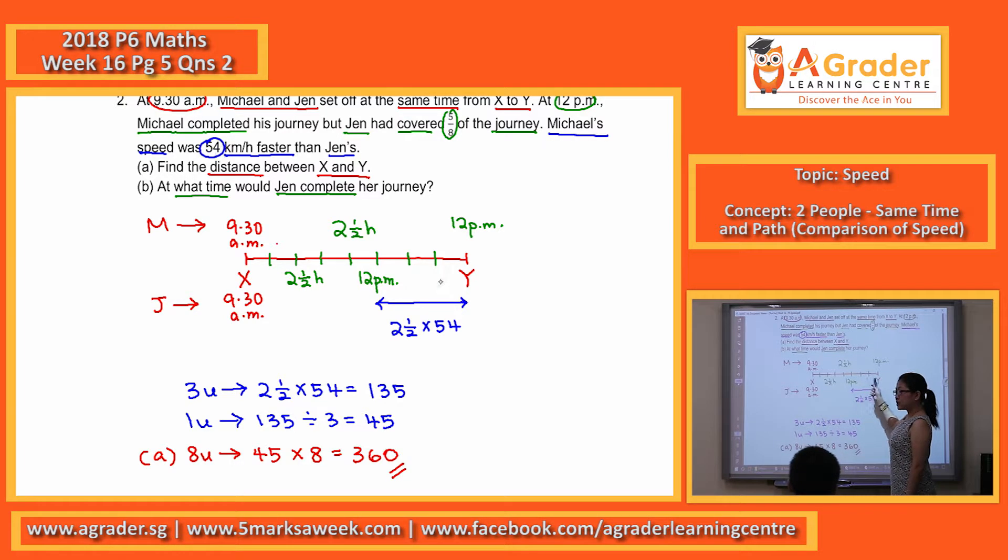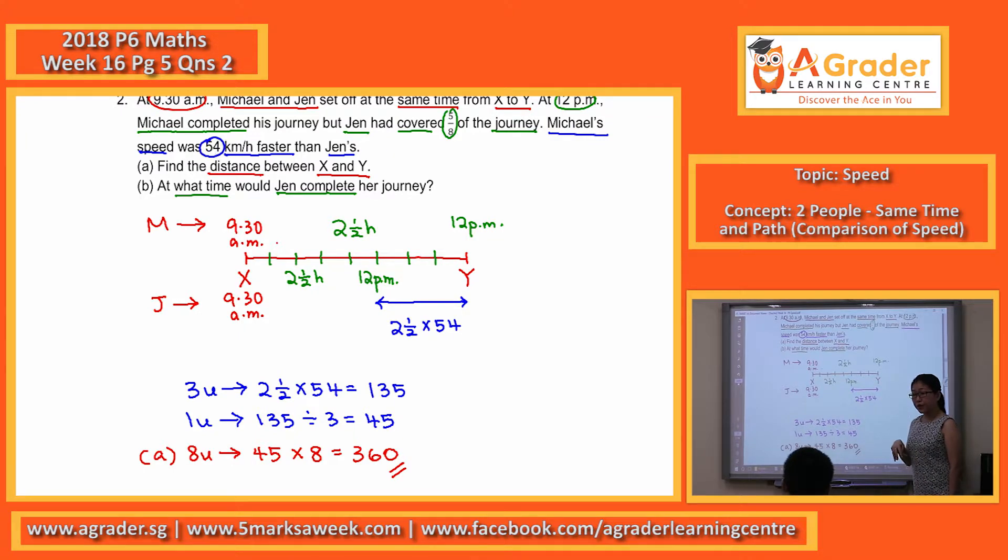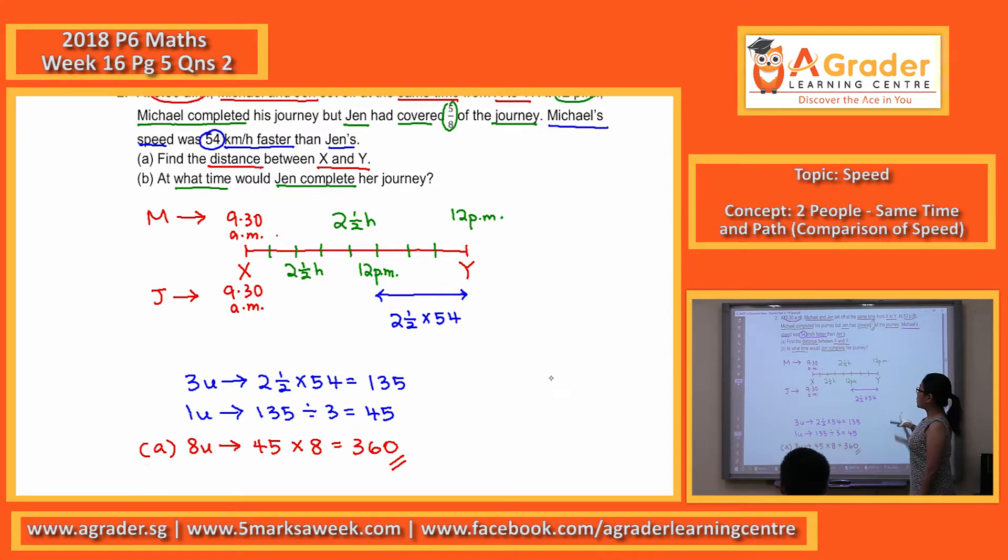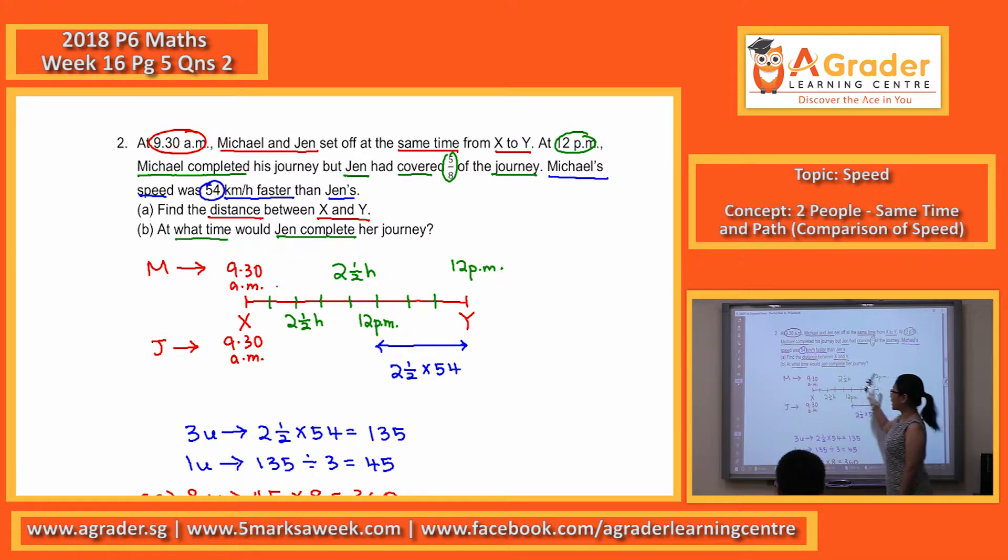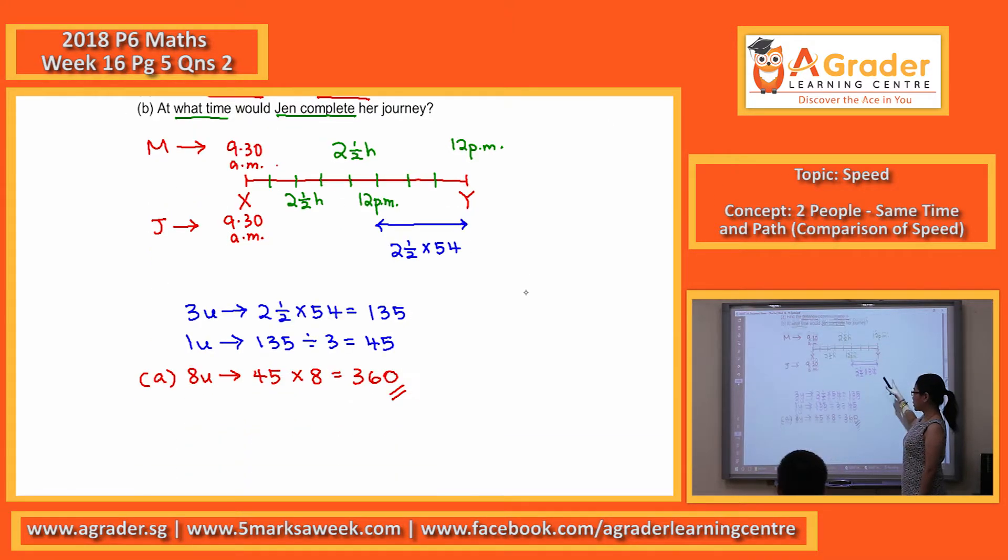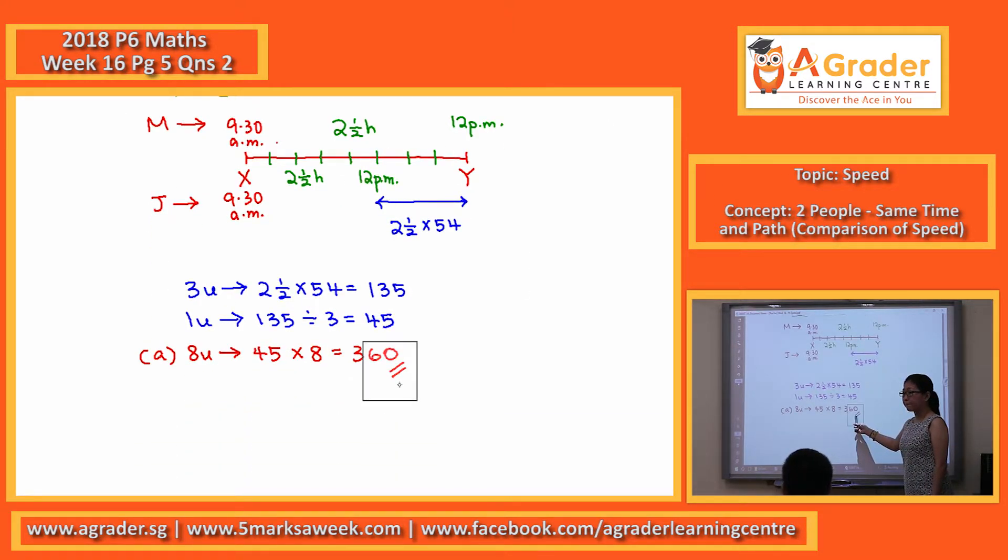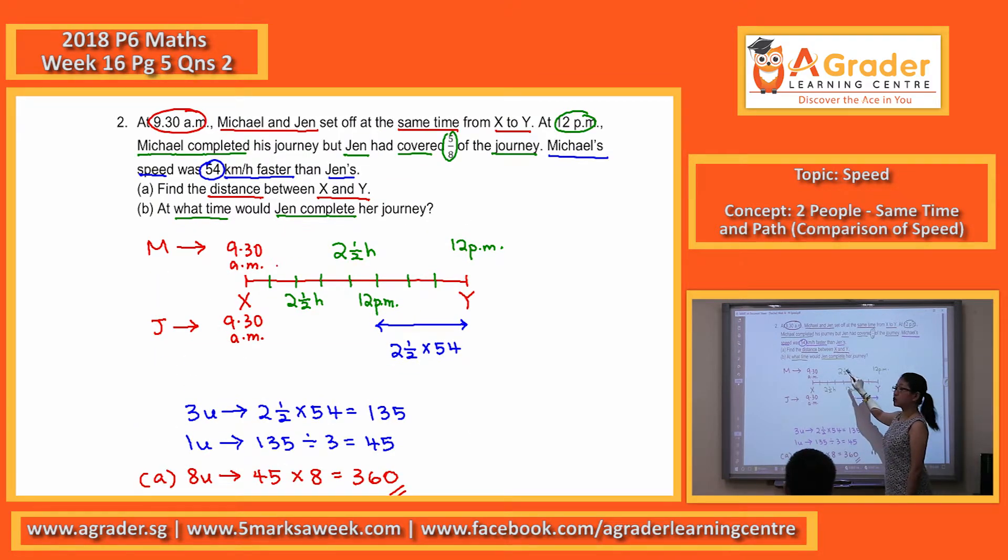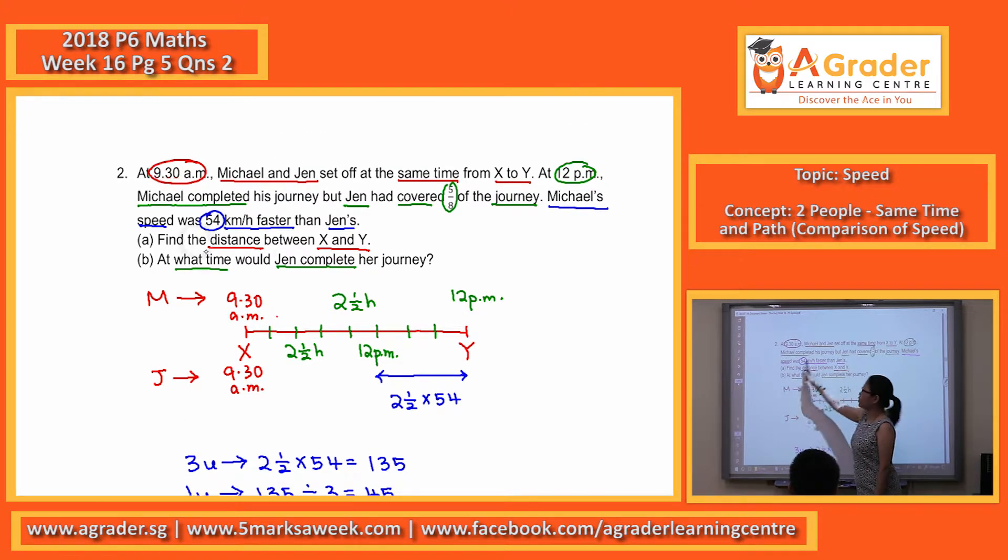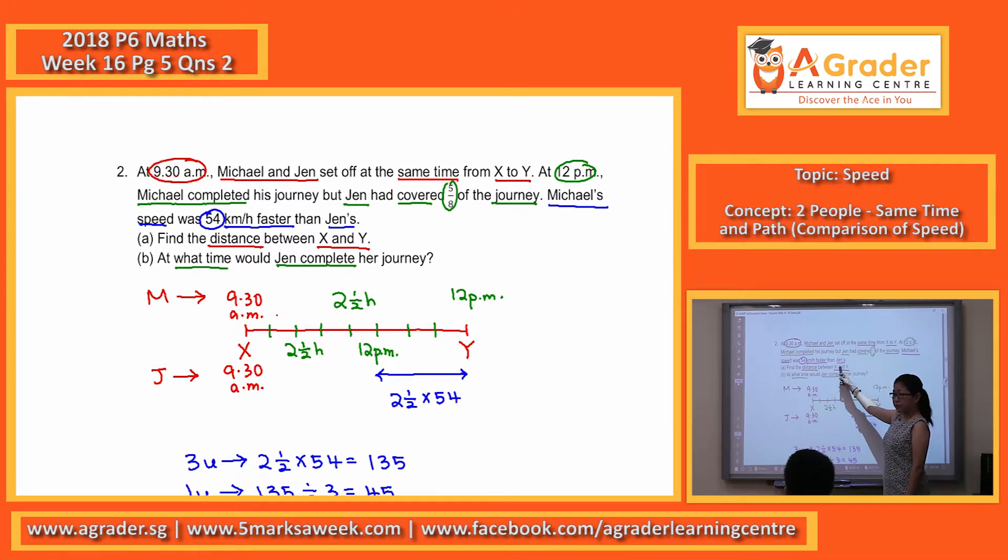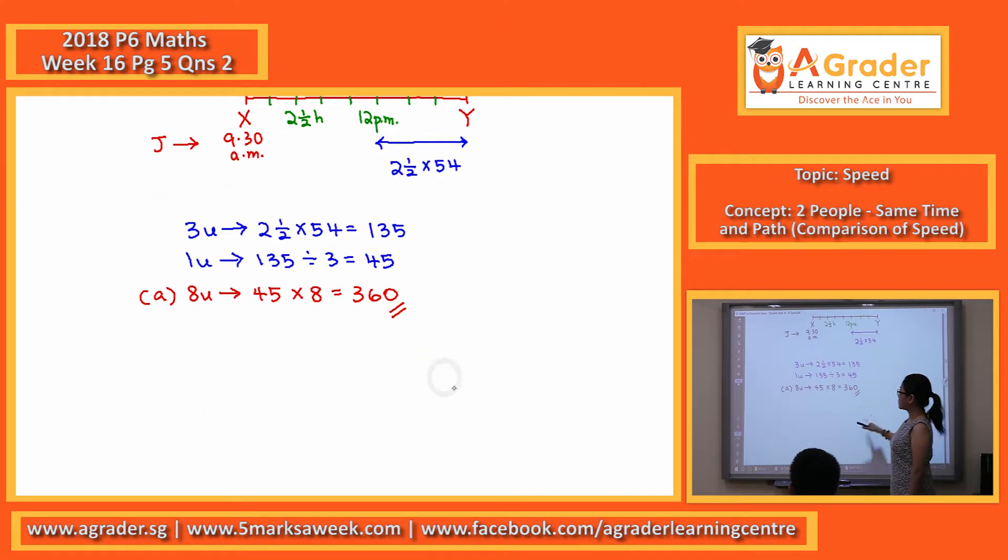So we know the distance is the 3 units, but we don't know her speed, right? But you can actually use Michael to find the speed first. Because Michael actually traveled the whole distance, right? So Michael actually traveled the whole 360 km and Michael only took 2.5 hours. So if you find Michael's speed first, then you minus away the 54, you will get Jen's speed. So we find Michael's speed first.